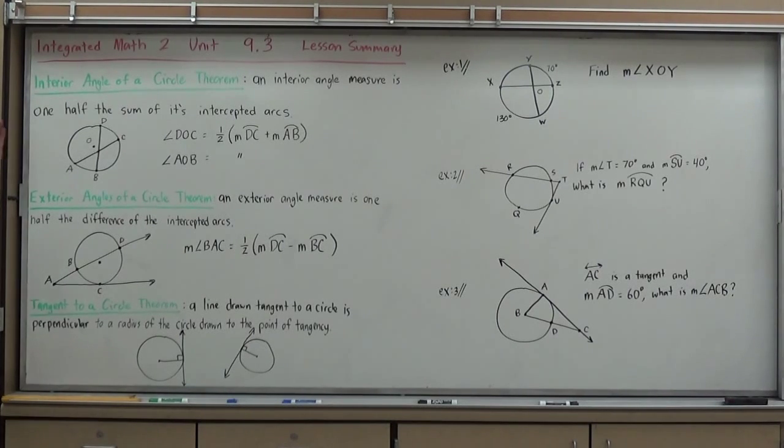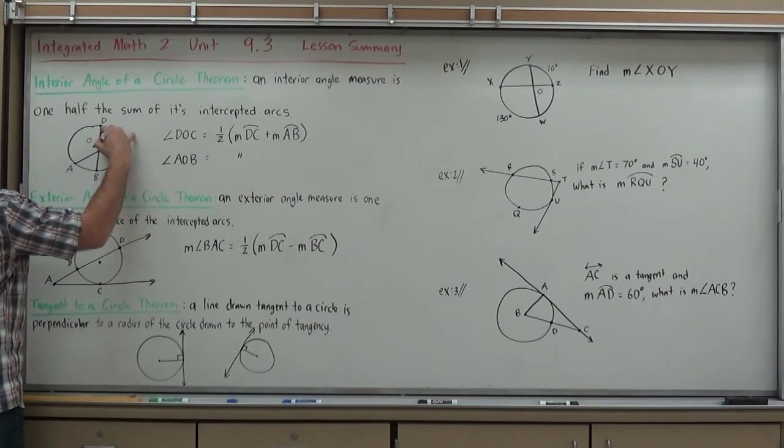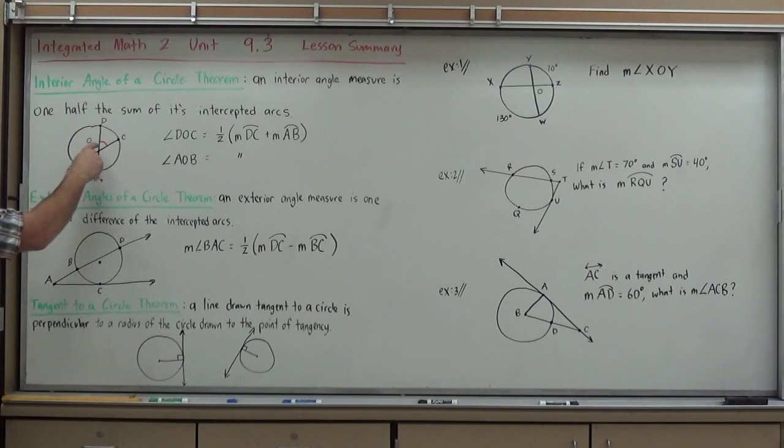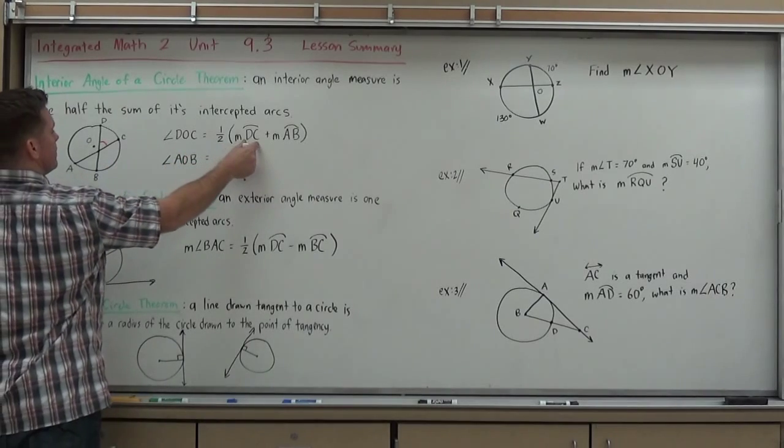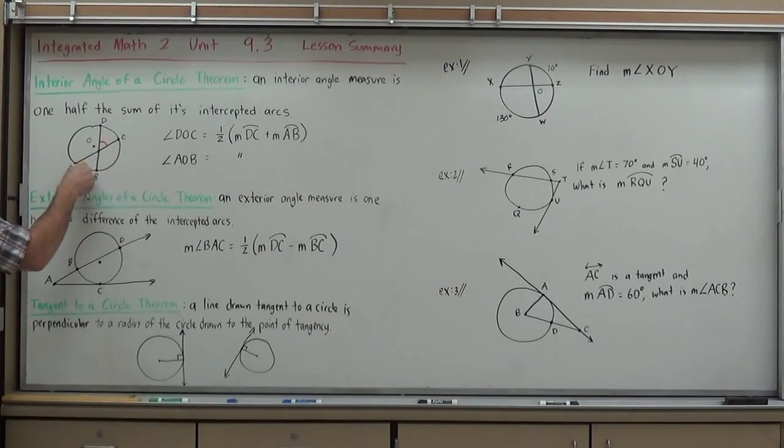The first theorem that we find is the interior angle of a circle theorem. So, if you have an angle inside the circle that is not formed by the center, because if it was formed by the center, we'd know the measure based on the arc, but it's formed somewhere in the interior without being on the center of the circle, we'd call that an interior angle. Its measure is always equal to one-half the sum of the arcs it forms. So, if I want to find the measure of angle DOC, this angle here, DOC, it's going to be equal to one-half the sum of these two arcs. So, I add arc DC and AB together, the ones formed by the vertical angles there, and cut them in half.